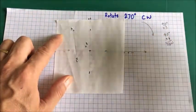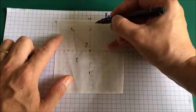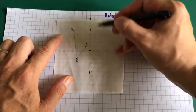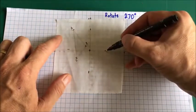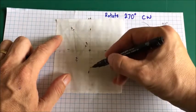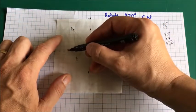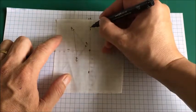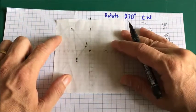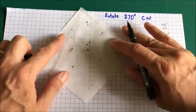Now I'm going to rotate 270 degrees. When this point rotates around to here that's 90 degrees; if it comes all the way around to here that's 180; and all the way around to here is 270. I'm going to make a little special marker to show where I start. Here we go - I'm going to rotate it clockwise.